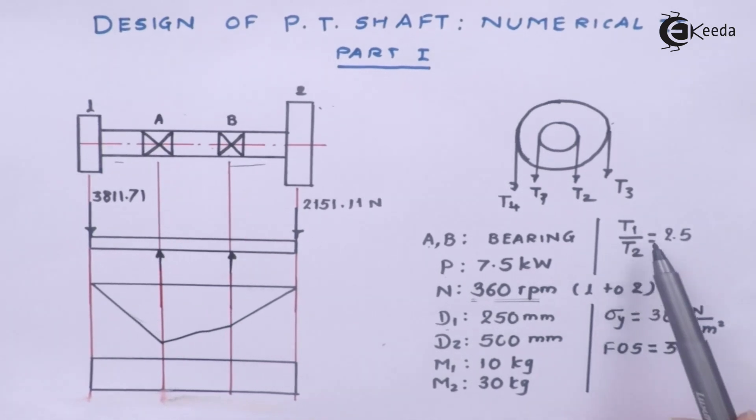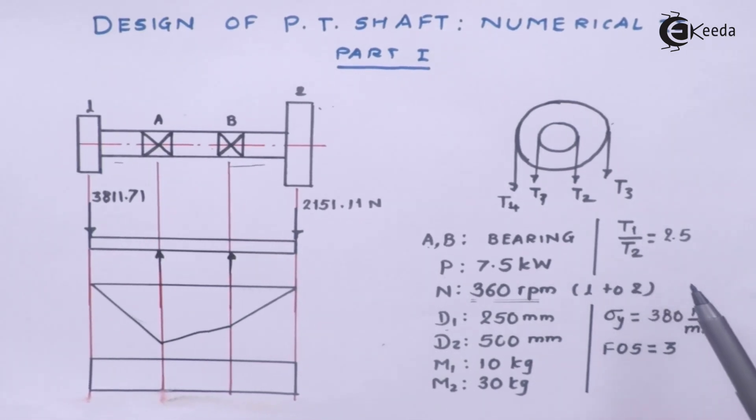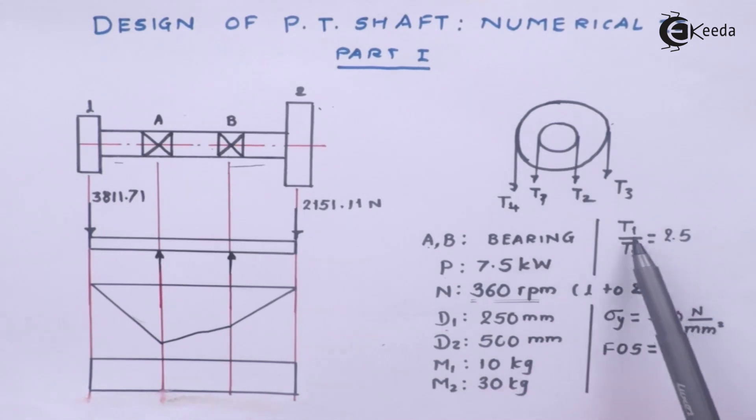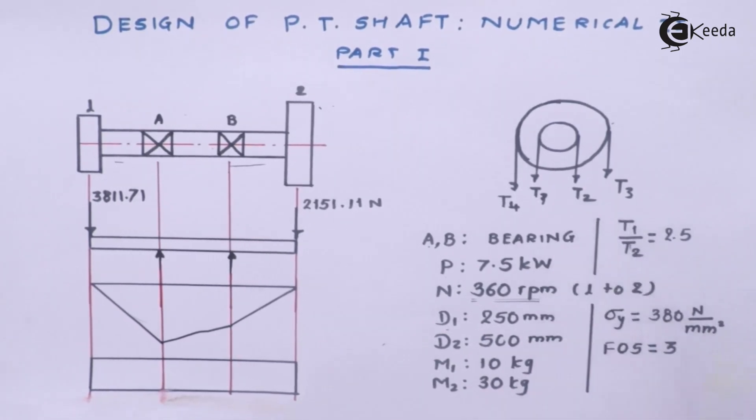We have been given that the ratio between the maximum tension and minimum tension on the respective pulley should be 2.5. For example if I consider pulley number 1, the tension between T1 and T2 the ratio will be 2.5. If I consider pulley number 2, T3 divided by T4 will be 2.5.